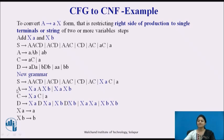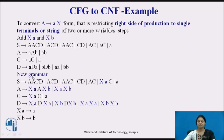Looking at the new grammar: in AACDA the single terminal A is replaced by XA, and all occurrences of terminal B are replaced by XB throughout the productions. So all B's become XB and all standalone A terminals become XA. This gives us the new grammar after terminal replacement.